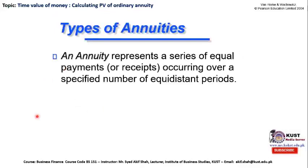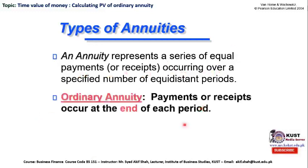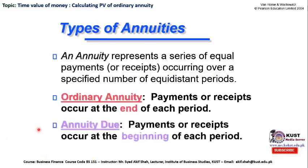The annuities concept, as explained in detail in my previous lecture, refers to a series of equal payments or receipts occurring over a specified number of equidistant periods. There are two types of annuity: one is known as ordinary annuity and the other is annuity due. In this lecture, once again we will be discussing ordinary annuity, but the numerical cases will be related to calculating the present value of ordinary annuity.